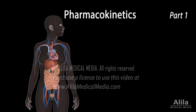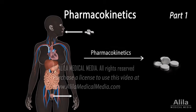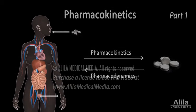Pharmacokinetics studies the events that happen to a drug from its administration to the time it is excreted from the body. It describes what the body does to a drug. Pharmacokinetics is one of the two major branches of pharmacology, the other being pharmacodynamics, which describes the effects a drug has on the body.